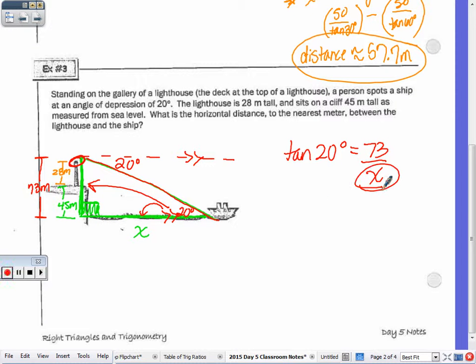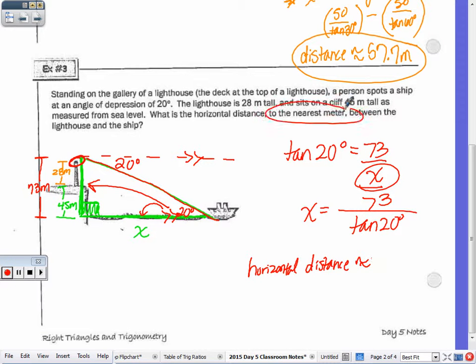And then, when X is in the denominator, that's division. So 73 divided by the tangent of 20. The horizontal distance is approximately to the nearest meter is going to be 201 meters. So go ahead and read and draw your picture for the last one. It can be something simple as a triangle, a right triangle. Or you can draw in number four.